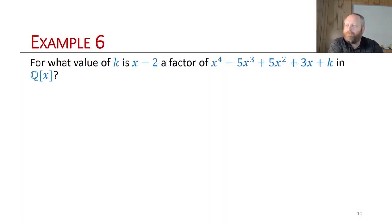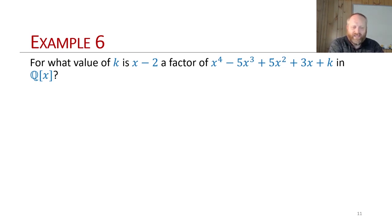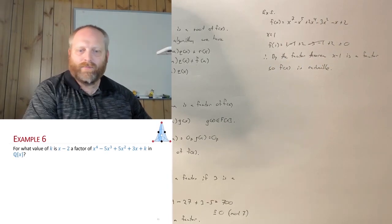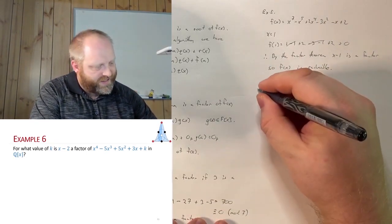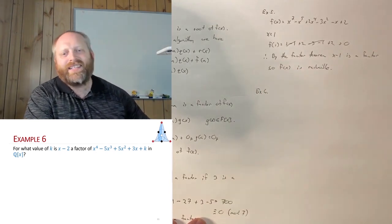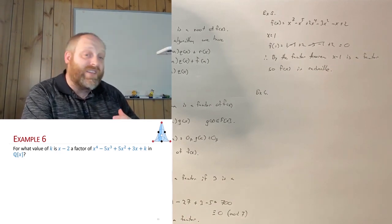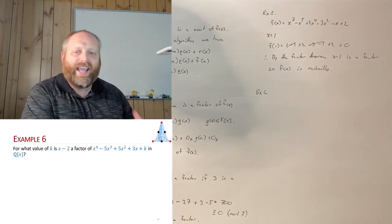For the last example: for what values of k is x minus 2 a factor of f(x) = x⁴ minus 5x³ plus 5x² plus 3x plus k in ℚ[x]? These examples show that many questions here are computational rather than purely proof-based. The value of k we find must be rational.